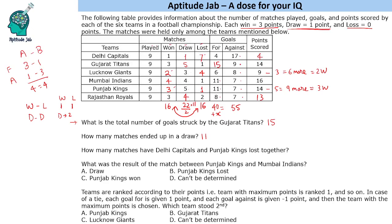To find the total number of matches, add all matches played — these add to 54 — but each match involves 2 teams, so the total number of matches is 27. Of these 27 matches, 16 are win-loss matches and 11 are draws. The wins column and losses column should match, which confirms our answer of 11 draw matches.